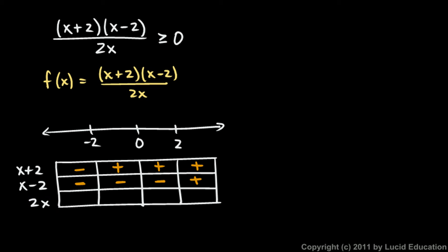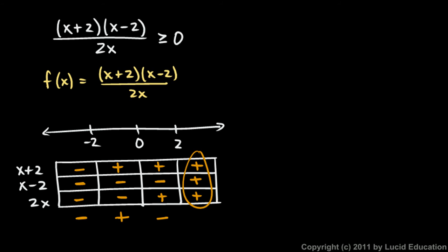And 2x — that's easy. It's negative where x is negative, and positive where x is positive. So if I put in some value for x and compute numerator times numerator divided by denominator: in the leftmost region, negative times negative divided by negative gives a negative result. In the next region, the result is positive. In the third region, positive times negative divided by positive gives a negative result. And if all are positive — x values bigger than 2 — the answer is positive.